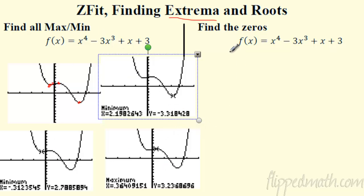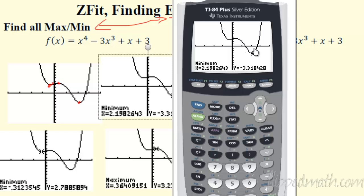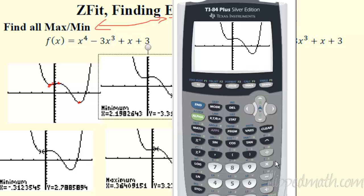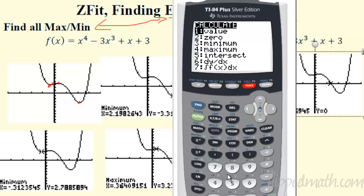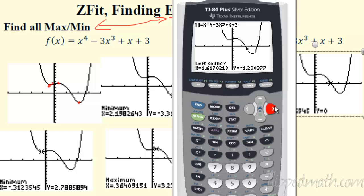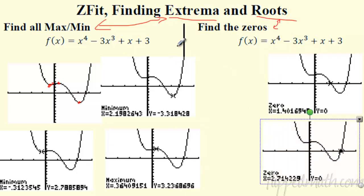Finding zeros (also called roots or x-intercepts) uses the same process. Go to second CALC and choose zero. Set the left bound left of where it crosses, right bound right of it, then hit enter for the guess. It gives you the x-intercept. Do the same for each zero. In just a few steps you get all the x-intercepts, the max, and the min — a ton of information about the function.